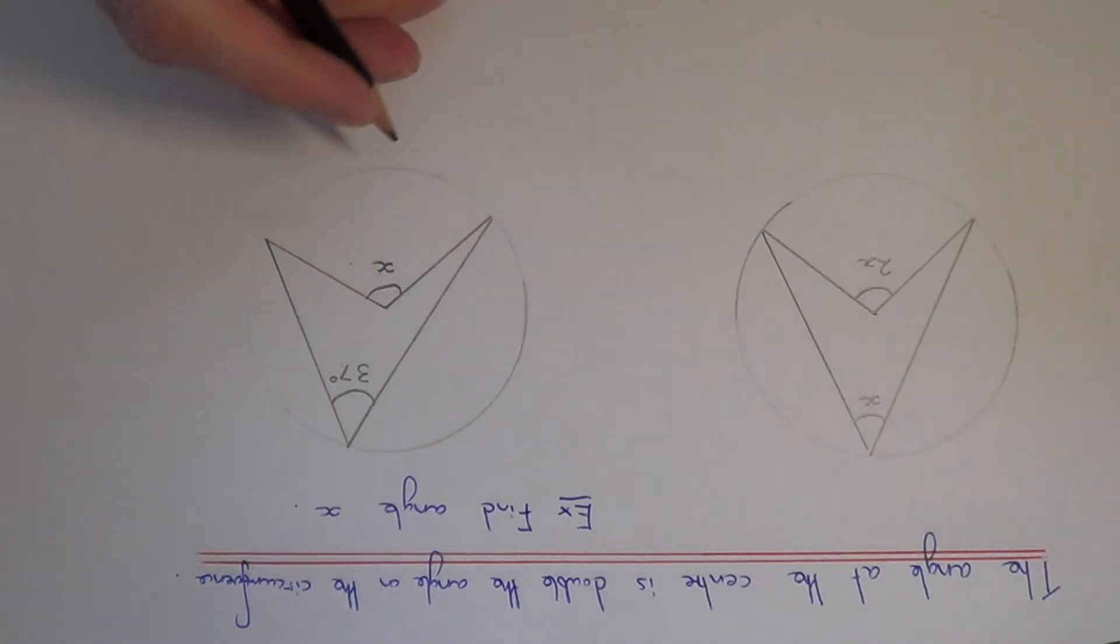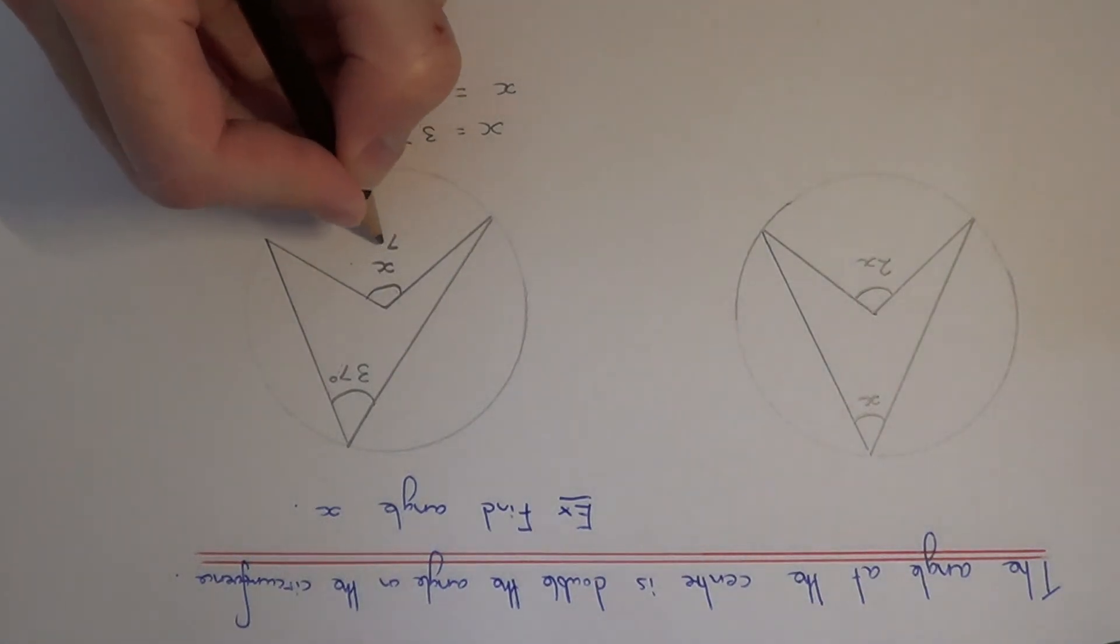We know that angle x will be twice as big as the circumference angle. So, if we double 37, we get an answer of 74 degrees. This angle here would be 74.